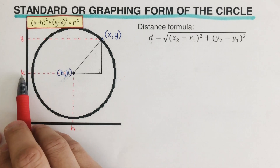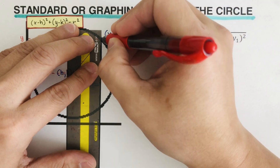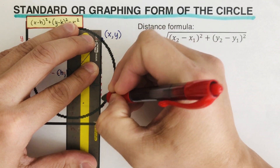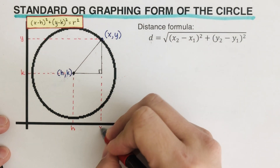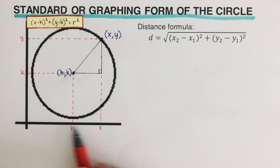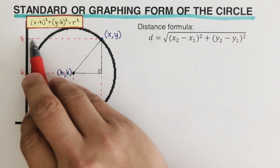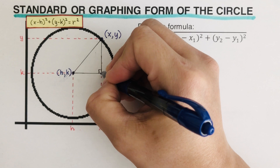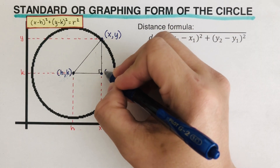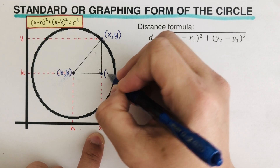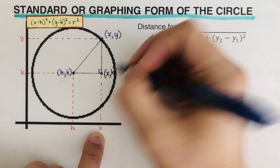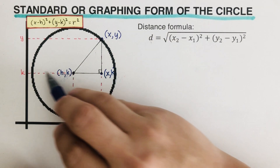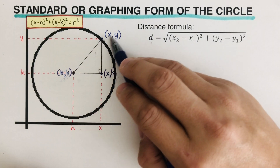So h is a random number on the x-axis, k is a random number on the y-axis, x is a random number on the x-axis, and y is a random number on the y-axis — they can be any number. The coordinate of the right triangle's third vertex is (x, k). So our three points are: center (h, k), vertex (x, k), and point on circle (x, y).